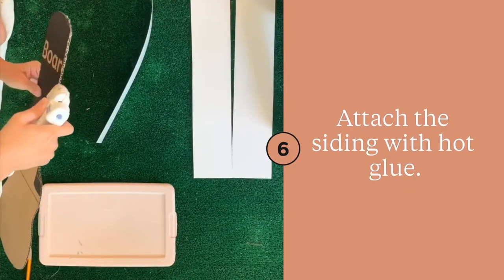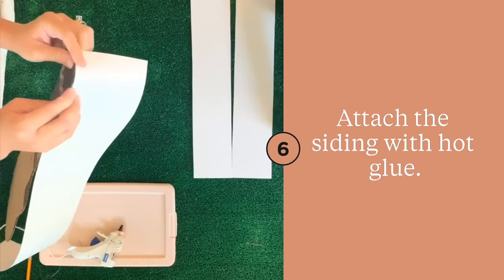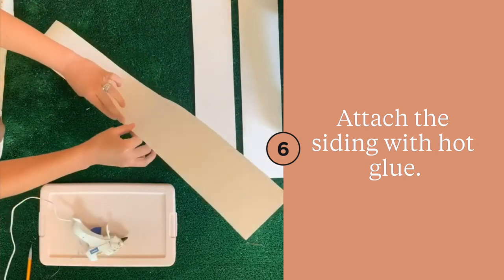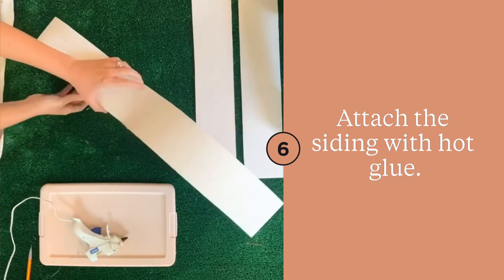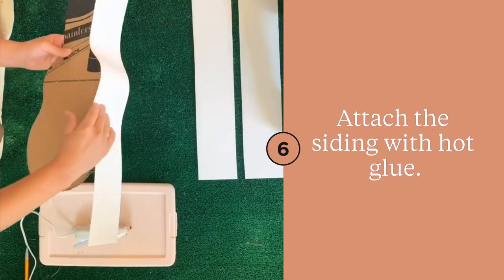Once you have all of your siding strips cut out for the case, you're going to start hot gluing them around the cardboard. I used a generous portion of hot glue, but just tried to make sure it was toward the inside of the case. That way, if you have any spilling over, it doesn't show up on the outside where you're going to be decorating.